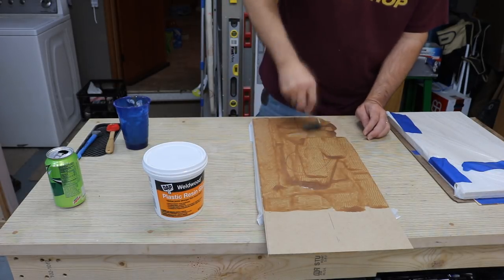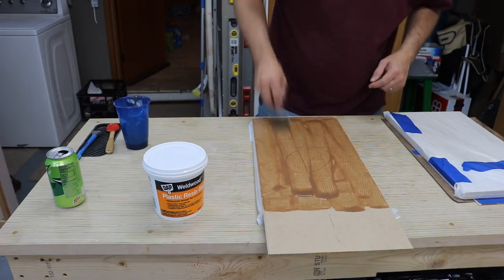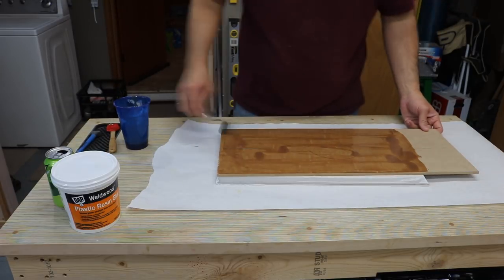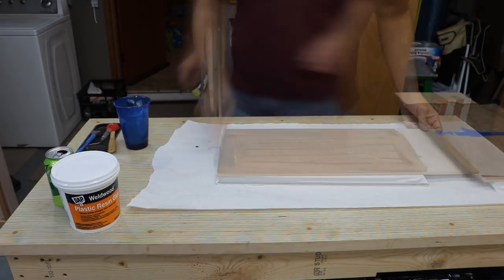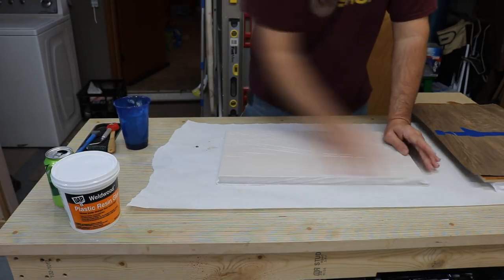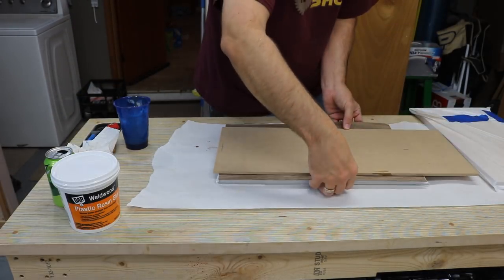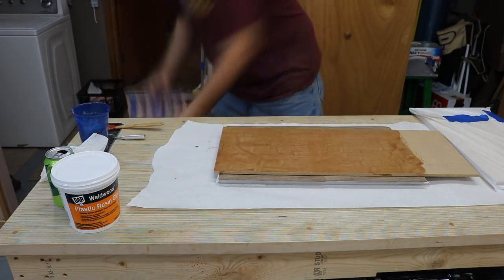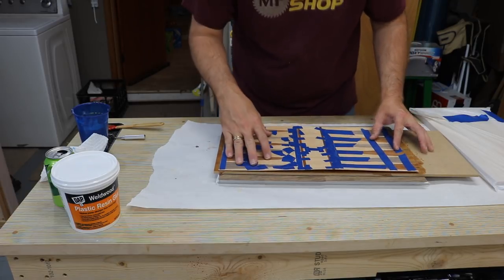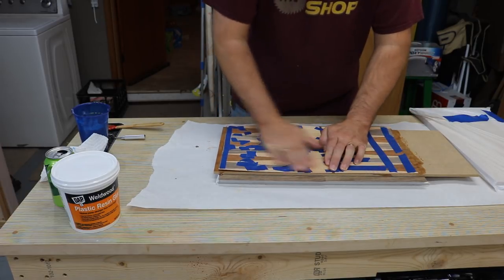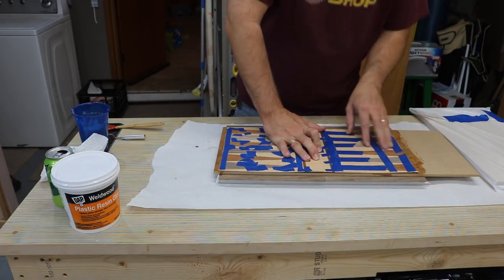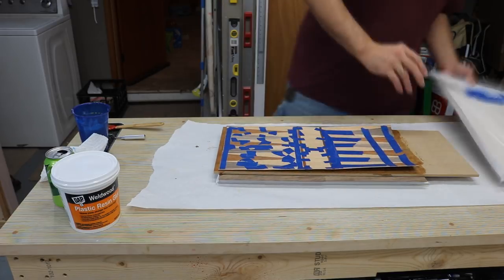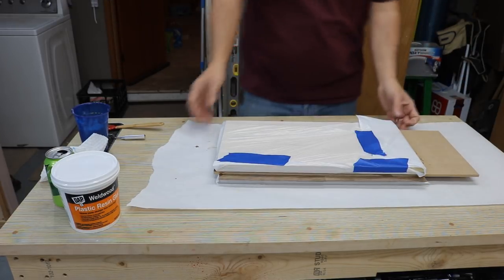This is the first time I've ever used it and it seemed to work out pretty good. So I applied the glue with a little glue roller, put the veneer down, and then turned the whole piece over and put more glue resin down and then put the game board on top of that.